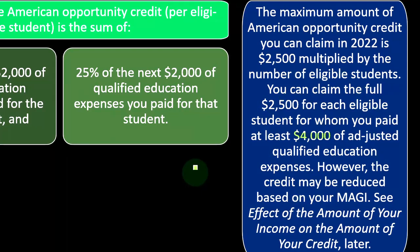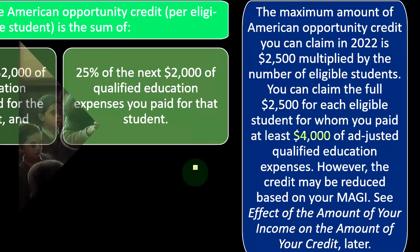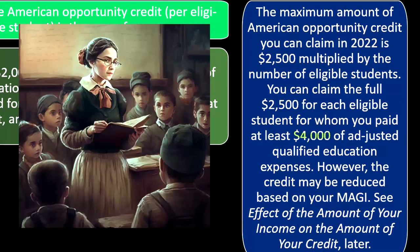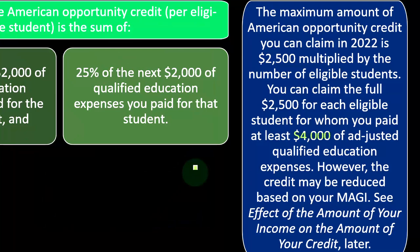So $4,000 of adjusted qualified education expenses maximizes the credit at $2,500 per student. However, the credit may be reduced based on your MAGI — your modified adjusted gross income. As your income goes above the threshold, the cap of $2,500 you could get from the credit could be reduced due to that phase-out.